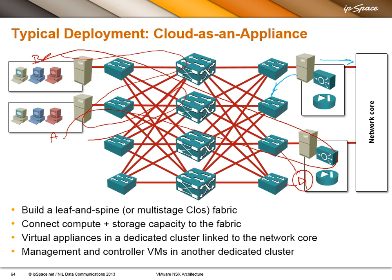Will OVS be ported to NSX for vSphere? OVS has been ported into the ESX kernel and that's called NSX vSwitch. NSX for vSphere currently uses the existing vDistributed Switch 5.5 with NSX capabilities on top. The NSX vSwitch is the path forward — if you want OVS goodness in an ESX environment, you'll want to look at the NSX for multi-hypervisor environment.